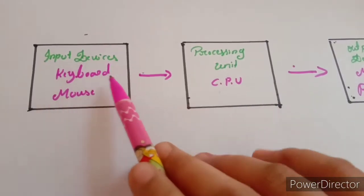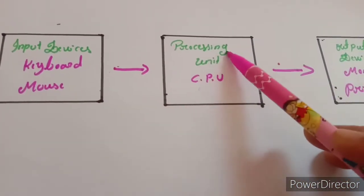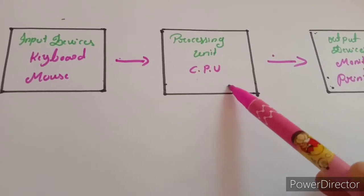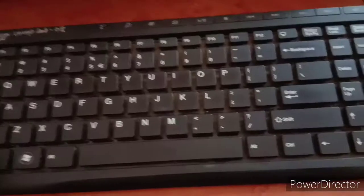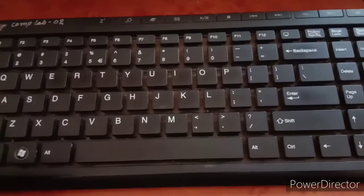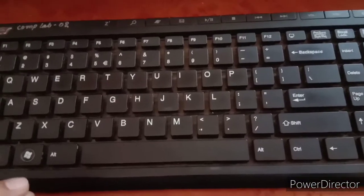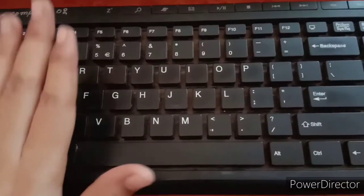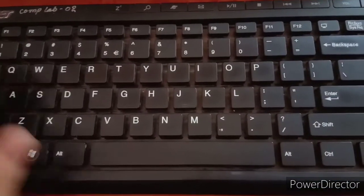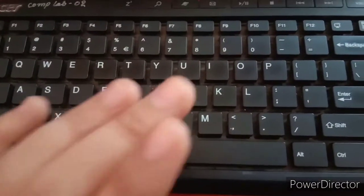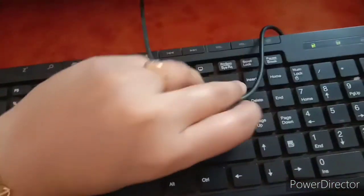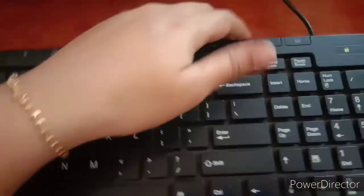To recap: input devices are keyboard and mouse; processing unit is CPU, which stands for Central Processing Unit; output devices are monitor and printer. The keyboard is used to enter data or give instructions to the computer. It is connected to the CPU box with a cable.